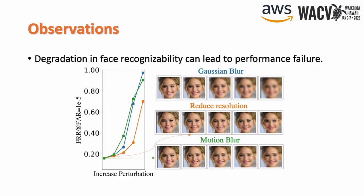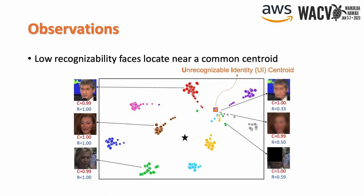To further reveal the issue, we make a few observations through experiments. We first notice that manually decreasing face identity recognizability by introducing artificial image perturbation can lead to performance failure of face recognition systems. In fact, as faces become increasingly unrecognizable, their embeddings migrate to join a common cluster, which we call the unrecognizable ID centroid, or the UI centroid.